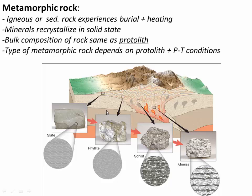As a rock undergoes metamorphism, minerals literally recrystallize in a solid state — and this is true of all metamorphism. Whatever minerals you start with, bonds begin to be broken, individual atoms are broken off and reattached in another place. Sometimes that recrystallization leads to entirely new minerals; other times it just leads to growth or recrystallization of the same mineral type, for example quartz recrystallizing into more quartz. Nothing melts — these minerals just reconfigure in a solid state. Another hallmark of metamorphism is that the bulk composition of the rock stays the same as the starting material, or the protolith, because nothing is entering or leaving the rock.